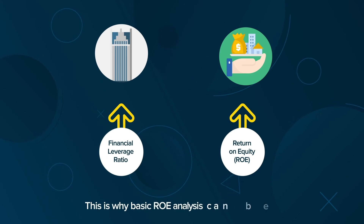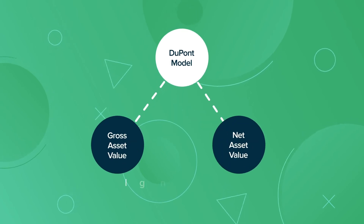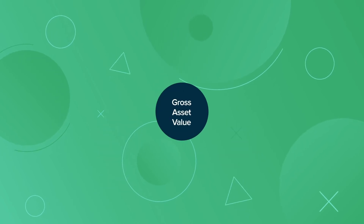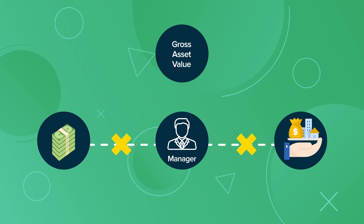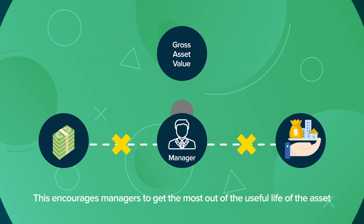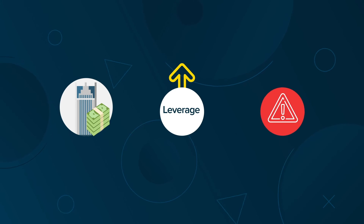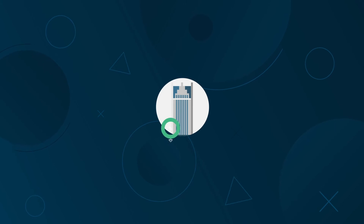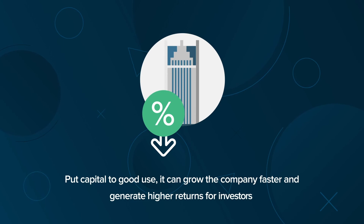This is why basic ROE analysis can be misleading. The DuPont model uses gross asset value, which ignores depreciation, instead of net asset value. Using gross asset value no longer incentivizes managers to borrow more and invest in new assets — this encourages managers to get the most out of the useful life of the asset. It's important to note that borrowing more money increases leverage and creates a higher risk of default, but borrowing more isn't inherently bad. If a company can borrow money at low interest rates and put capital to good use, it can grow the company faster and generate higher returns for investors.